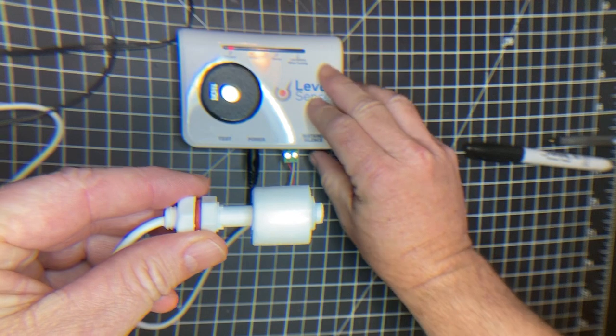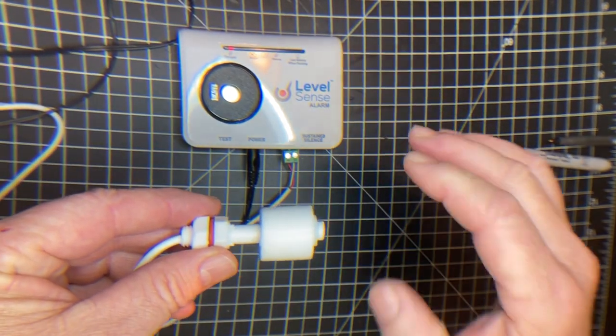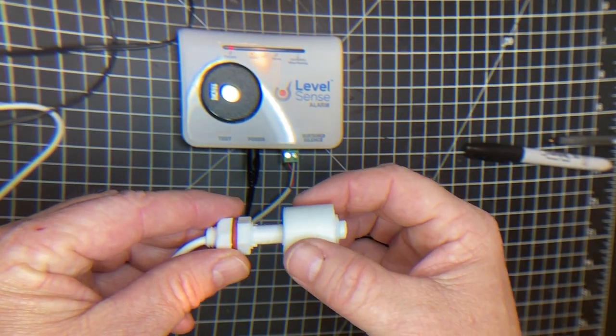So in this mode, right now I have the silence on. So I'm going to remove the silence, and when the float switch rises, the alarm goes off.